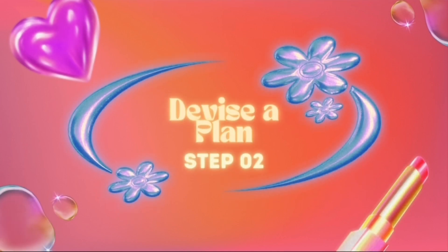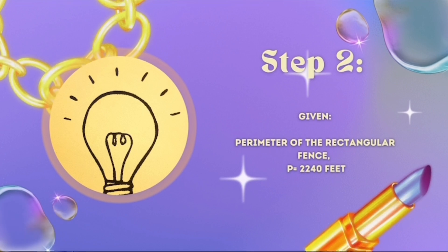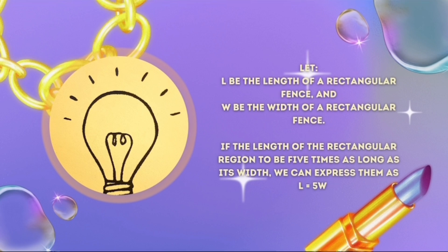Now let's devise a plan. The given perimeter in the problem is 2,240 feet. We have to substitute the equation of length into the perimeter equation to determine the width of the fence, then substitute the value of width into the length equation to determine the length of the fence.